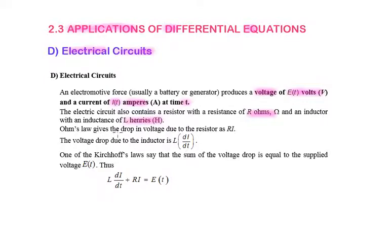Ohm's law gives the drop in voltage due to the resistor as RI. The voltage drop due to the inductor is L times dI/dt. One of Kirchhoff's laws says that the sum of the voltage drops is equal to the supply voltage E(t).